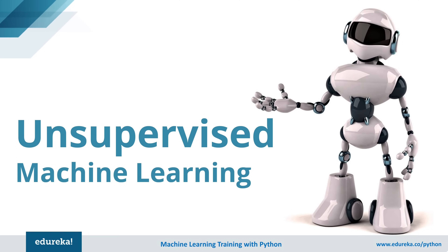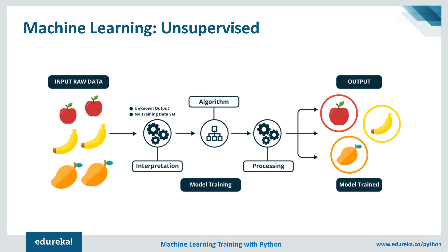Let's learn about the next category: unsupervised learning. Mathematically, unsupervised learning is where you only have input data X and no corresponding output variable. The goal is to model the underlying structure or distribution in the data to learn more about it. In simple terms, the instances of a training dataset do not have an expected output associated with them. Instead, unsupervised learning algorithms detect patterns based on the inherent characteristics of the input data. An example of a task that applies unsupervised learning is clustering.